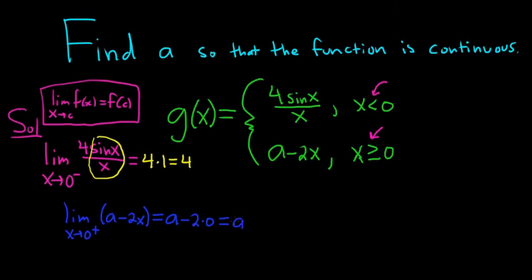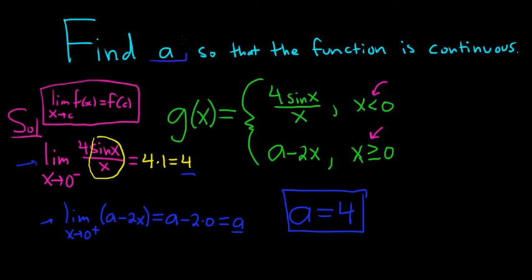We want this function to be continuous at 0. In order to do that, we want the limit from the left and the limit from the right to exist and be equal. Therefore, these numbers must be equal, so a equals 4. That's what the question wanted — find a so the function is continuous. Whenever you have these problems with less than or greater than, always take the one-sided limits and set them equal. That will force continuity in these problems.